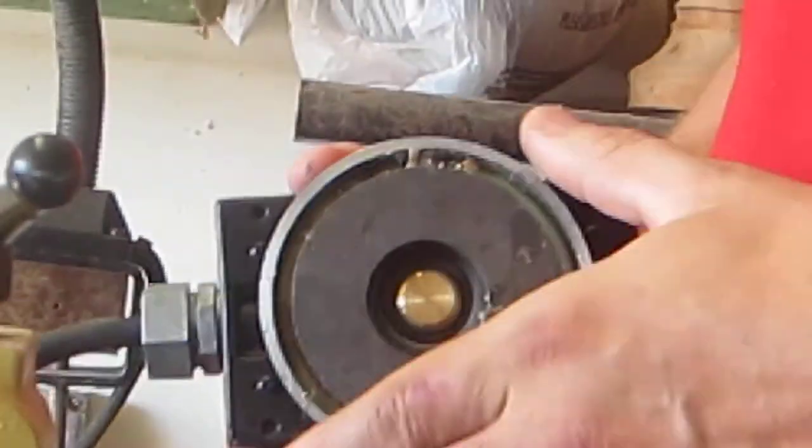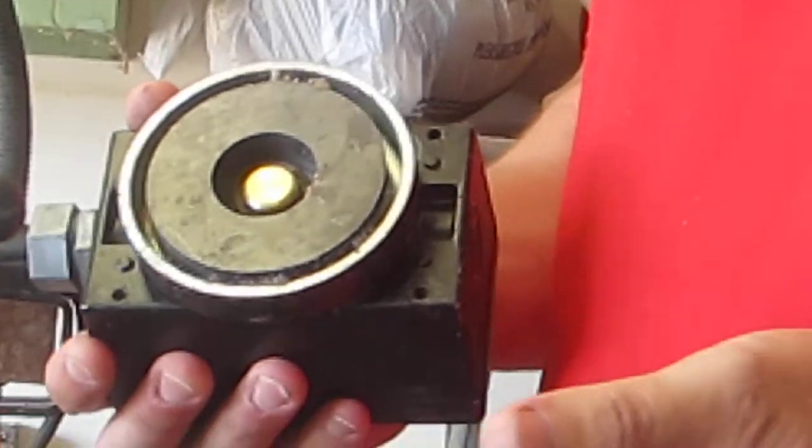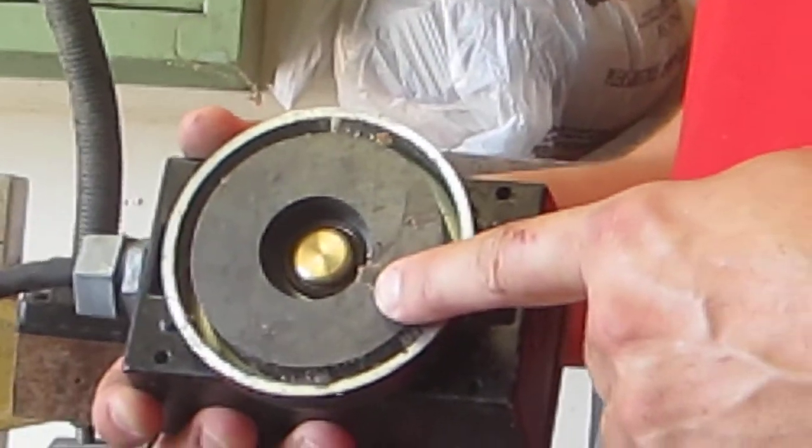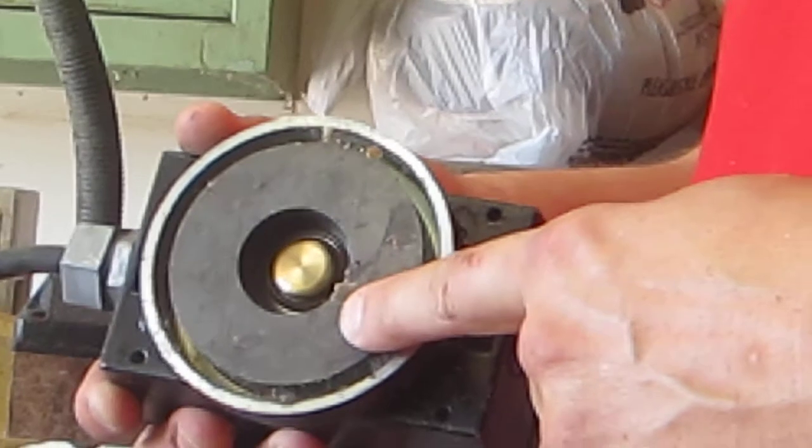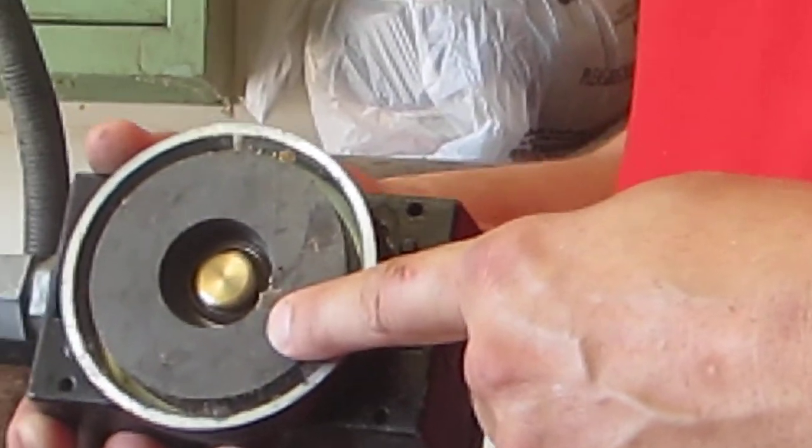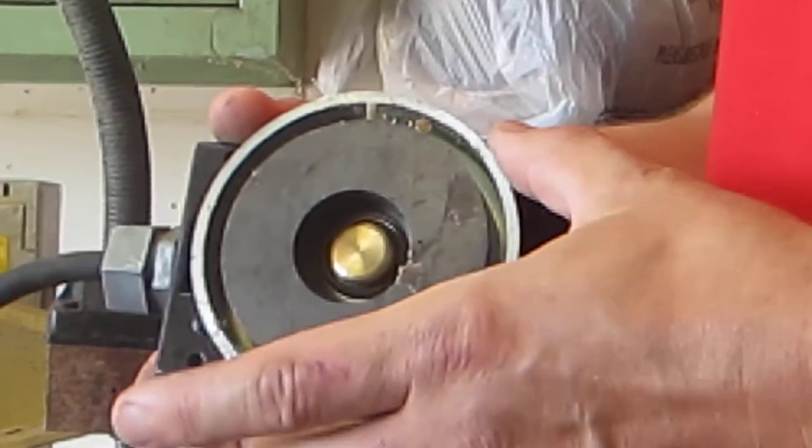Then you go to Northern Tool and Equipment. I'm sure they have it in other areas, but I got mine at Northern Tool. And you get this big magnet. Now, this magnet is designed for working with welding situations, and it only costs about $3.